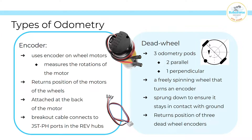Now I will be explaining the different types of odometry. The first one is wheel motor encoder odometry, which measures the rotations of the motor. It returns the positions of the motors that connect to the wheels of the drivetrain. The encoder itself is attached to the back of the motor, and it has a breakout cable that connects the JST-PH ports to the REV control hubs.